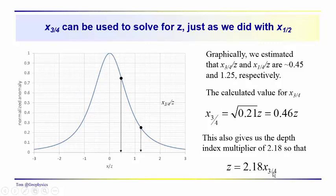Just like we did with x one half, if we knew what x one half was, the depth index multiplier was 1.305, we could estimate z. We could also estimate z using the three quarters max location or the one quarter max location.